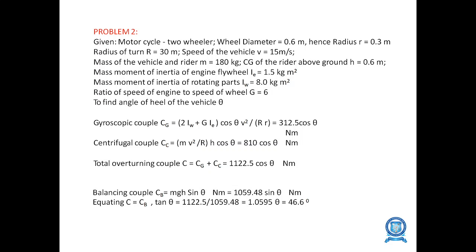In the second problem, the same method is applied for a motorcycle (two-wheeler). First, find the gyroscopic couple CG, then the centrifugal couple CC. The total overturning couple C is the product of the centrifugal and gyroscopic couples. Then find the balancing couple CB. Equating, we get tan θ giving theta = 46.60 degrees.